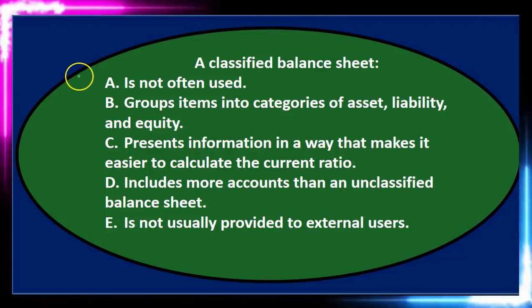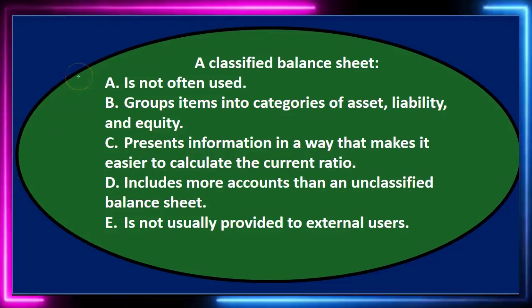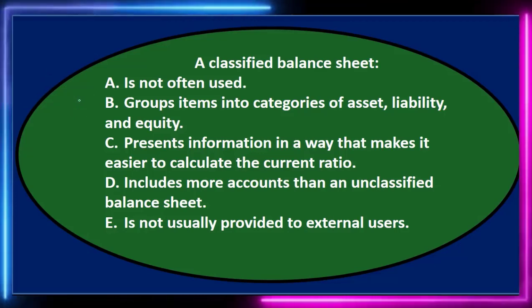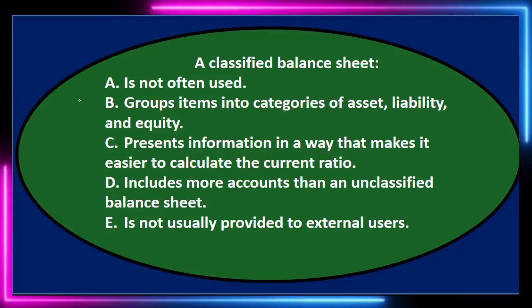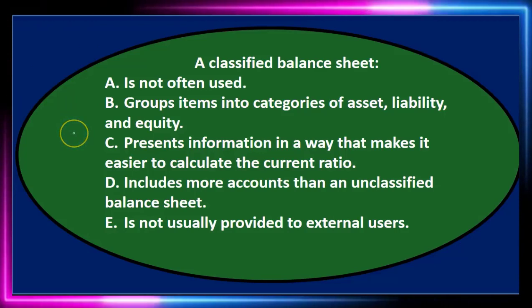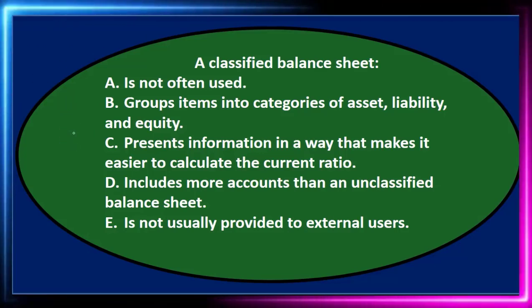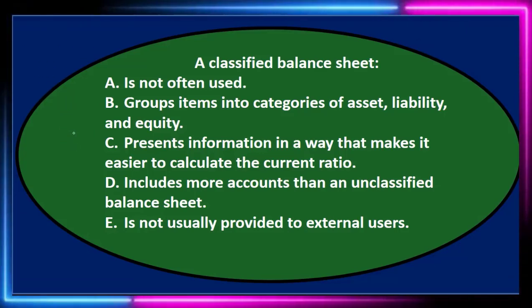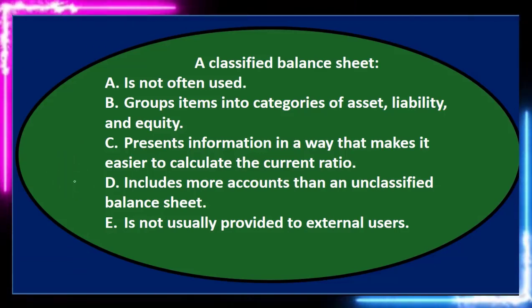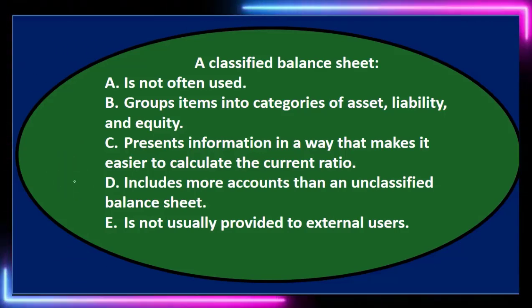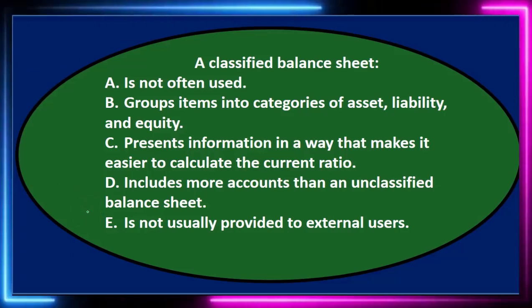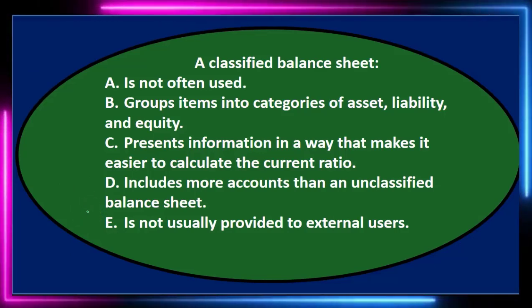A classified balance sheet. A: is not often used. B: groups items into categories of assets, liability, and equity. C: presents information in a way that makes it easier to calculate the current ratio. D: includes more accounts than an unclassified balance sheet. And E: is not usually provided to external users.